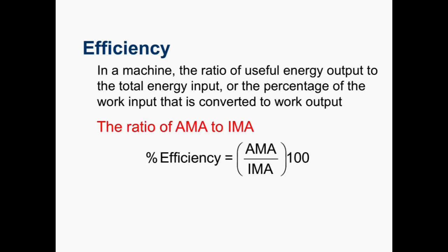We hope that the values of IMA and AMA are close. To see how efficient your machine is, you take the AMA divided by the IMA, and you are going to multiply it by 100. The AMA will never be larger than the IMA. So if you get a percent efficiency that is greater than 100, you did something wrong and you need to go ahead and redo the problem again.